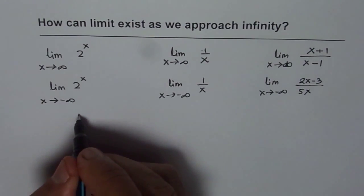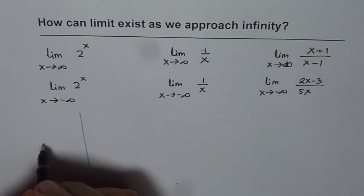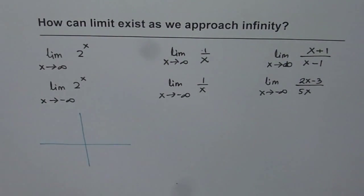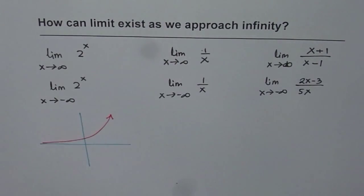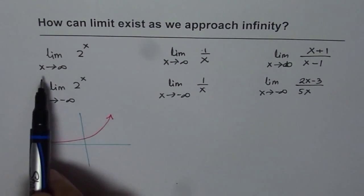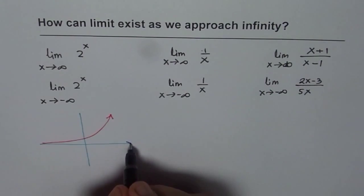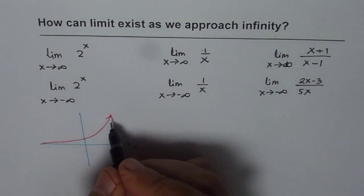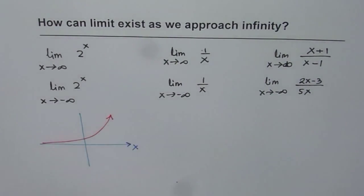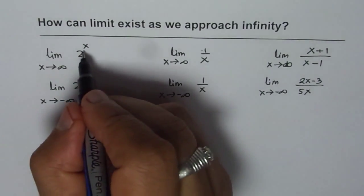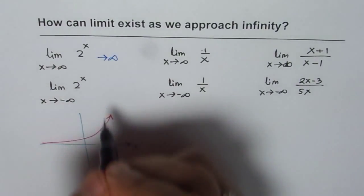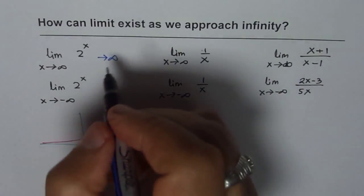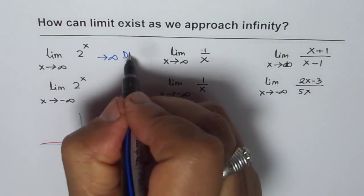Let's look at 2 to the power of x. Let me sketch this function — that will give us a better idea. If we sketch 2 to the power of x, we find that the function looks like an exponential curve. From the graph, as x approaches positive infinity, f of x approaches infinity. So the function approaches infinity as x approaches infinity.